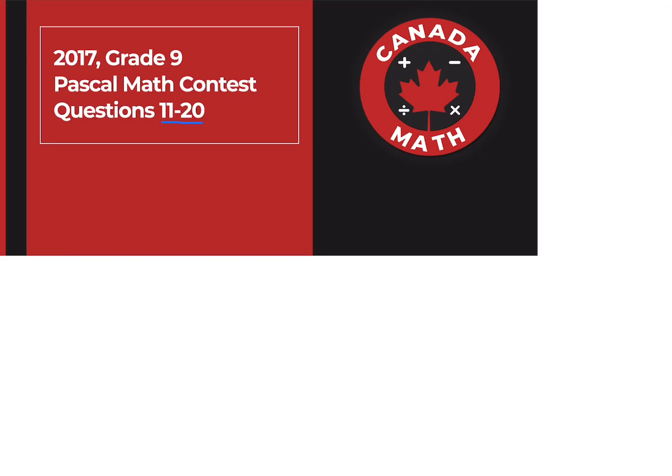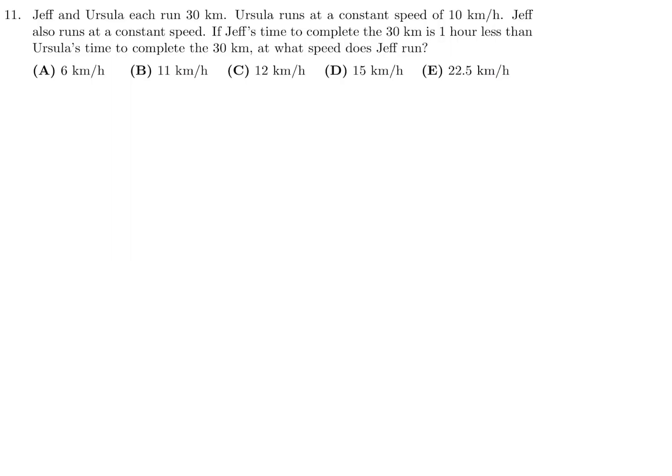Questions 11 through 20 on the 2017 Grade 9 Pascal Math Contest. Jeff and Ursula each run 30 kilometers. Ursula runs at a constant speed of 10 kilometers per hour. Jeff also runs at a constant speed. If Jeff's time to complete the 30 kilometers is one hour less than Ursula's time to complete the 30 kilometers, at what speed does Jeff run?